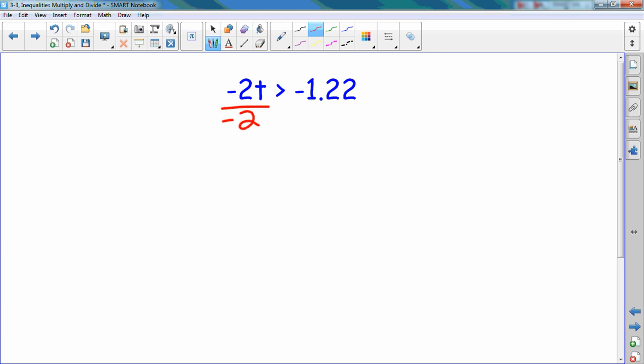So when I divide by a negative, what do I have to remember to do? Flip the sign. And these are going to cancel out. I'm left with t, and 1.22 divided by negative 2.